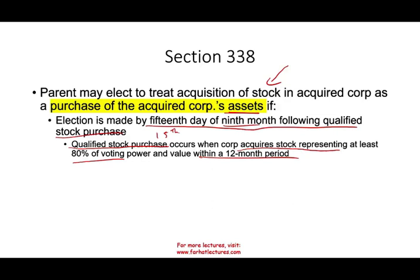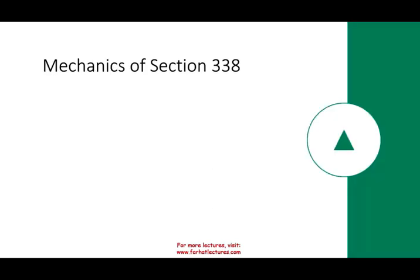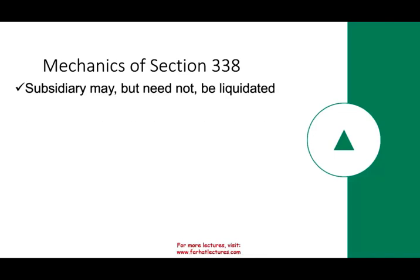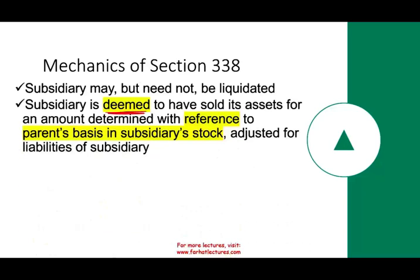What does this election allow you to do? It allows you to say you bought actually the assets, not the stocks. The subsidiary may or may not be liquidated. The subsidiary is deemed to have sold its assets for an amount determined with reference to the parent's basis in the subsidiary stock, adjusted for liabilities of the subsidiary. We assume a price — we deem that the assets were sold at a certain price. As far as you're concerned, the price will be given to you.